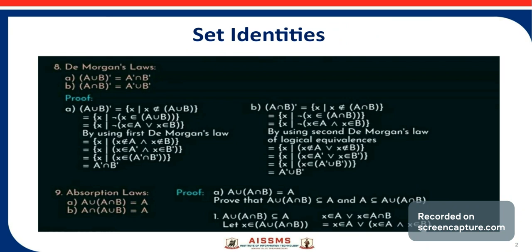We can write this as: X belongs to A or X belongs to B. By using De Morgan's law, this becomes: X does not belong to A and X does not belong to B. We can write this as X belongs to A complement and X belongs to B complement, so X belongs to A complement intersection B complement. Thus (A union B) complement equals A complement intersection B complement.